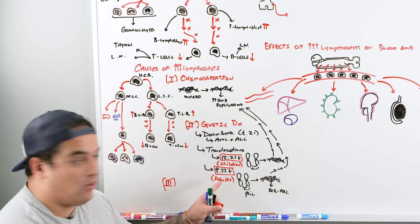Another consequence is bone pain. With so many lymphoblasts replicating in the bone marrow, the marrow has to expand, causing distension of pain receptors and nerves. This can present as bone pain or a child limping — especially in areas where red bone marrow is present.